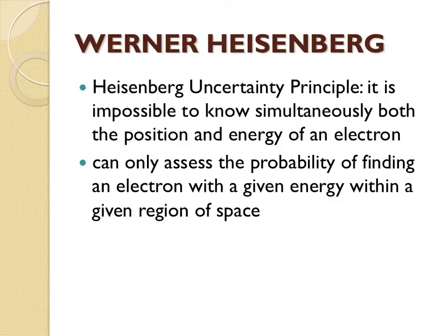This idea came from Werner Heisenberg. He has his Heisenberg uncertainty principle, and it states that you can't know the position and the energy of an electron simultaneously, or at the same time. So there's a basic uncertainty in being able to find an electron within an atom. He said you can only look at the probability of finding an electron within a given space within the atom.